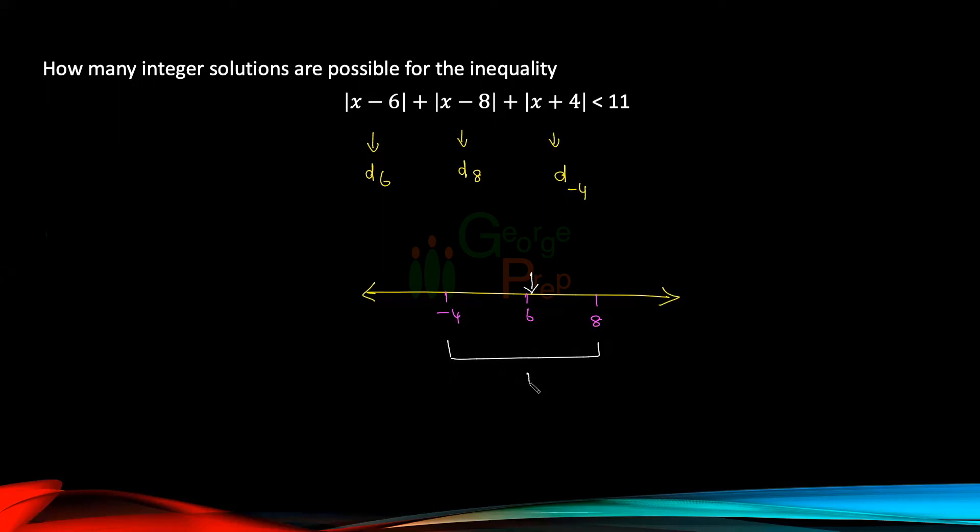But this question is asking us when this will be less than 11 units. Will it ever be less than 11 units? The minimum value here itself is 12 units. So here the question is asking for when this will become less than 11 units. It will never become less than 11 units.